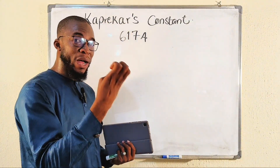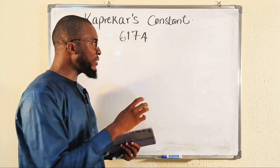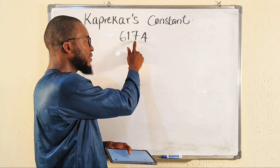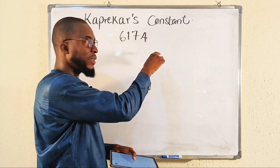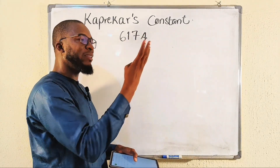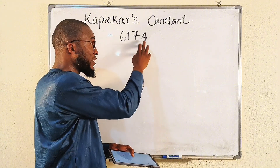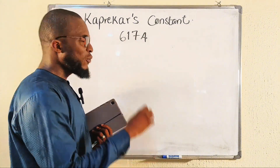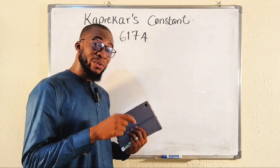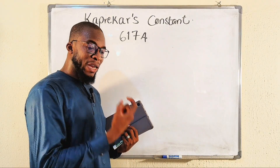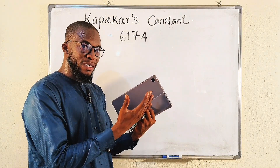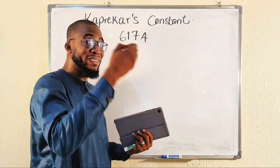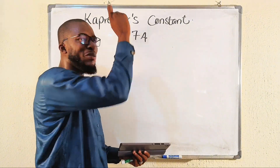He said that once you have any four-digit number — but let the number not be all the same digits, like 6666 or 7777. Let it be at random, but you can have some repeated digits, just not all of them. If you create the largest possible number and the smallest possible number from those digits, then take the difference, and repeat the same iteration — on or before the seventh iteration, you must get this number back.